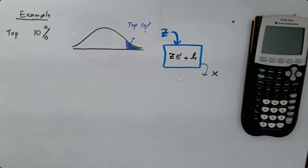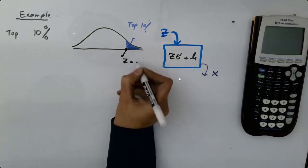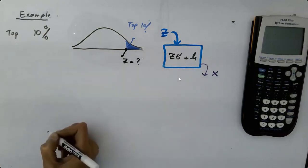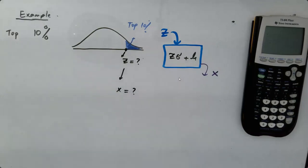Top 10% is going to be here. 10% of 100%. But it is top 10%. So what is the Z value for top 10%? What is this Z? So first we need to find Z. Then we're going to find our X value.